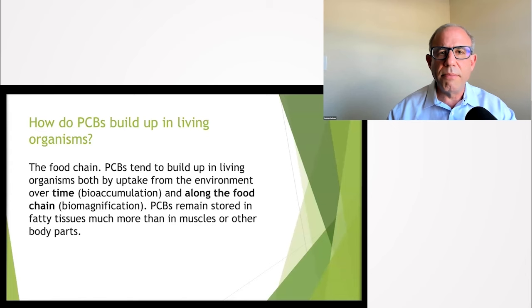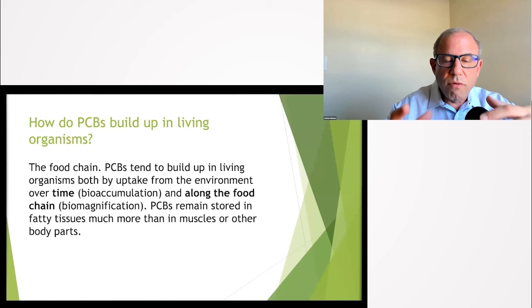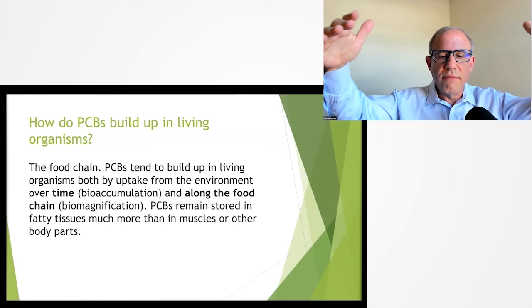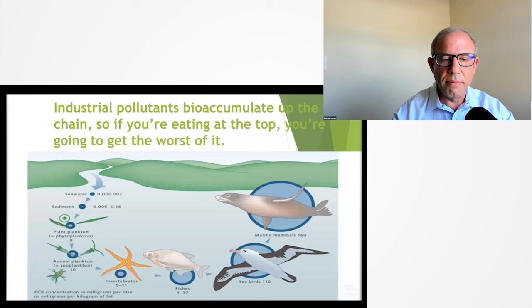How in the world do these PCBs, these fatty toxins, build up in living organisms? It's through the food chain. Number one: over time these toxins can accumulate in a living system - we call that bioaccumulation. And then the concept that as you go further up on the food chain you get higher and higher levels of these toxins - that's called biomagnification. An example of this is with PCBs. In seawater the concentration of PCBs is 0.00002 milligrams per kilogram of fat, whereas if you're a seabird, 110. If you're a sea vegetable you're going to have lower levels like 8 or 10. Again, you want to get on the bottom of the food chain.